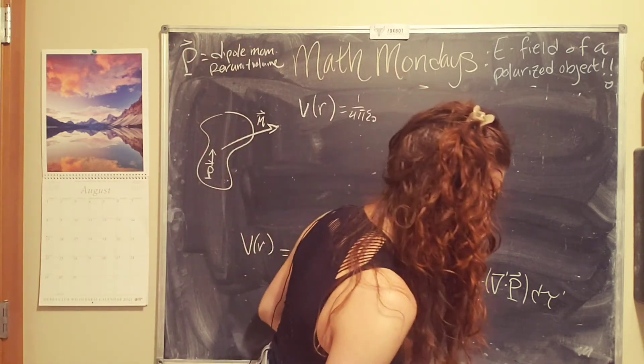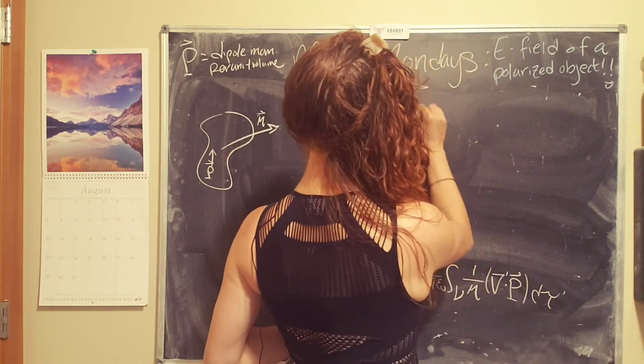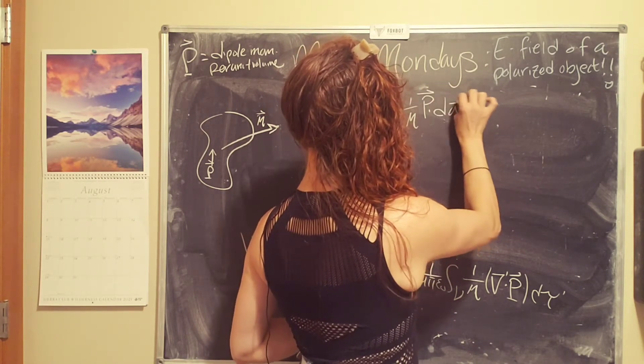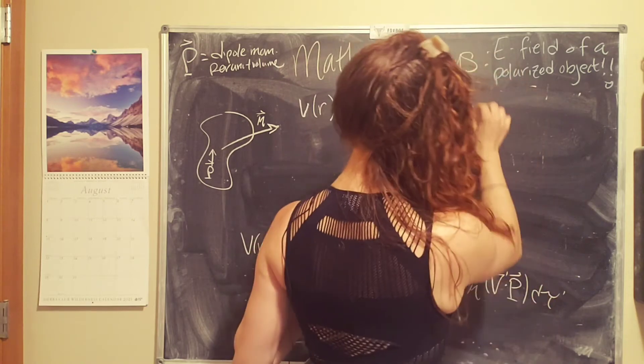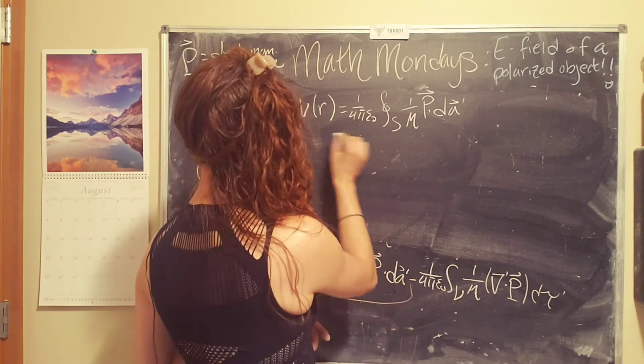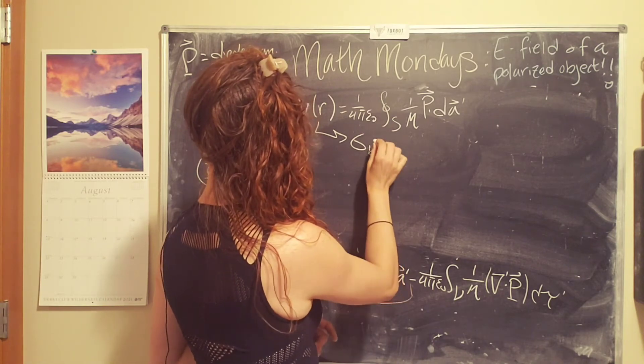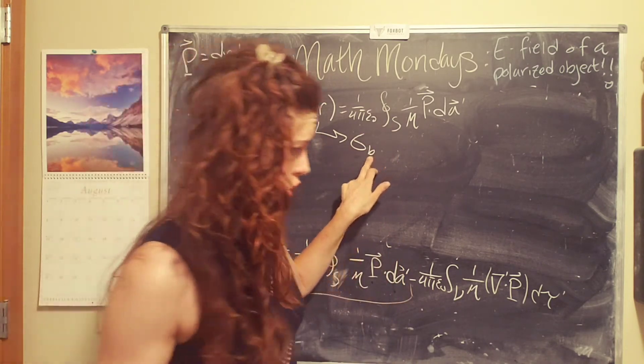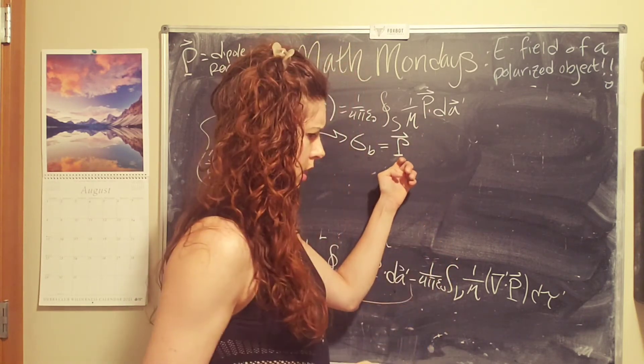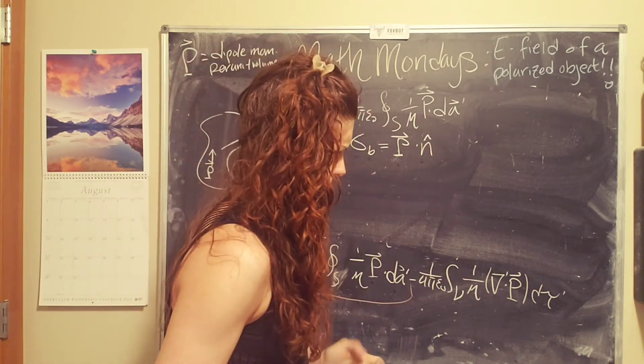So the potential of a surface charge looks like this: 1 over 4 pi epsilon naught integral over the surface. So basically this is very similar to a surface charge, but in this case we have bound charges where the polarization is dotted with the surface vector.